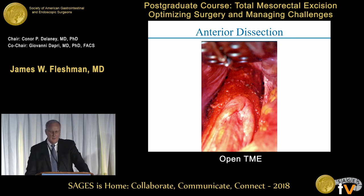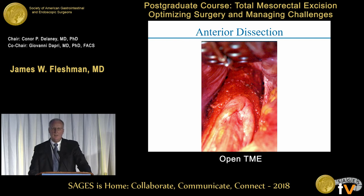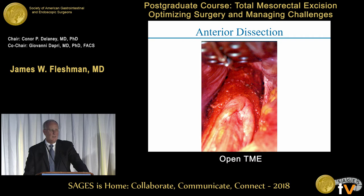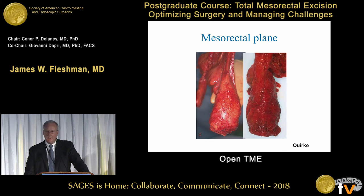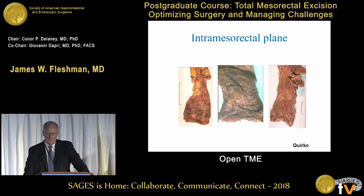The anterior dissection needs to follow either anterior to Denonvilliers' fascia based on where the tumor is, or behind it for a higher tumor. There is an areolar tissue plane anterior to the rectum that can be used to protect the nerves — the nervi erigentes behind the seminal vesicles and the prostate. Here's your specimen again: the mesorectal plane is something you need to get used to seeing and photographing in your own operating room. If you see a piece of bowel that comes out looking violated, you've harmed the patient.